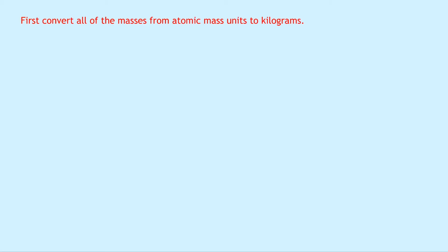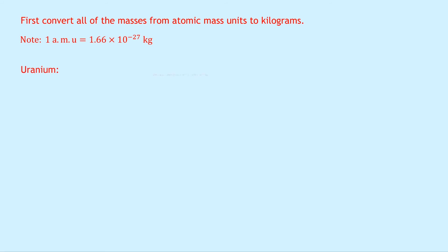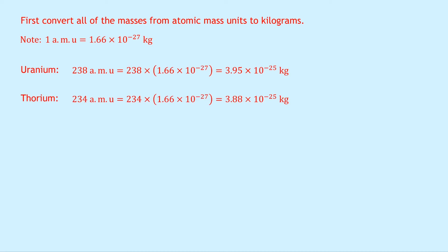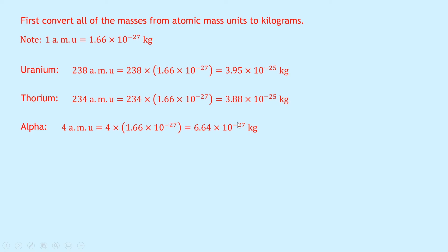First, we convert all masses from atomic mass units to kilograms using 1 amu = 1.66 × 10⁻²⁷ kg. For the uranium nucleus: 238 × 1.66 × 10⁻²⁷ = 3.95 × 10⁻²⁵ kg. For the thorium nucleus: 234 × 1.66 × 10⁻²⁷ = 3.88 × 10⁻²⁵ kg. For the alpha particle: 4 × 1.66 × 10⁻²⁷ = 6.64 × 10⁻²⁷ kg. This smaller mass is expected since it's a smaller particle.